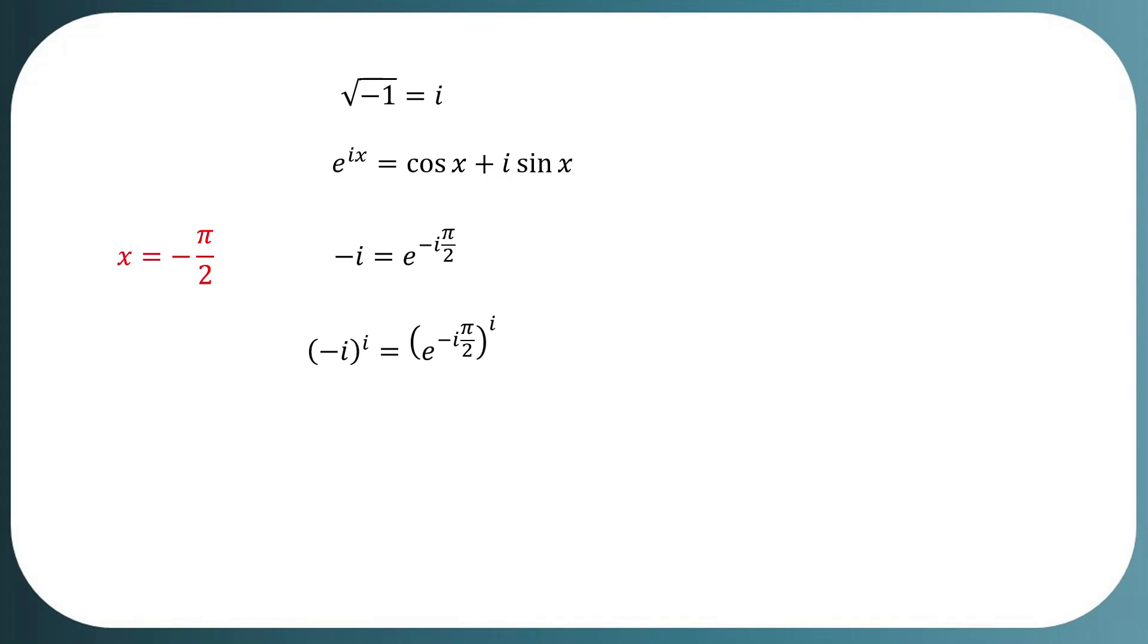Which is equal to e to the negative iota squared times pi by 2. Since iota squared is equal to negative 1, this implies value of negative iota squared equals positive 1.